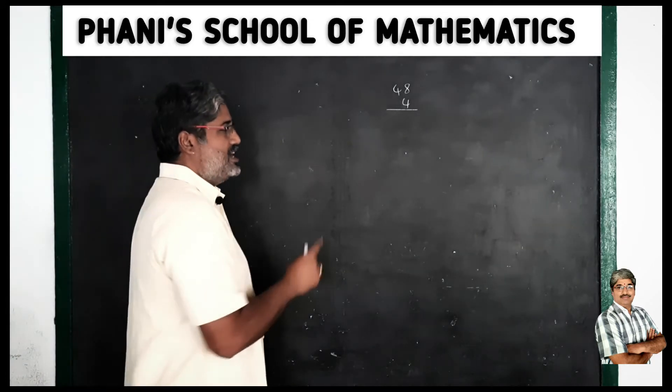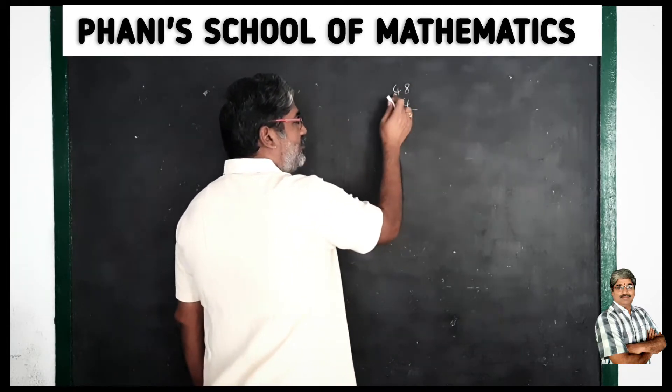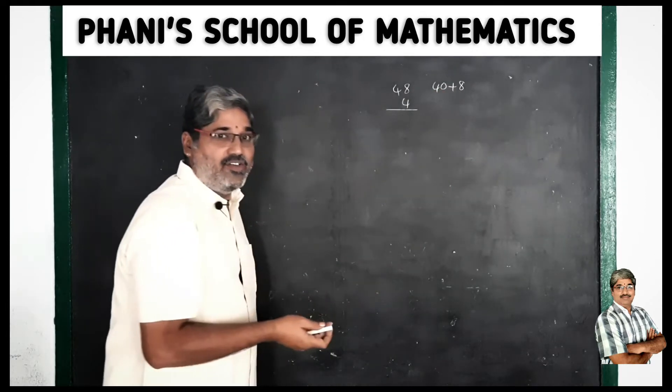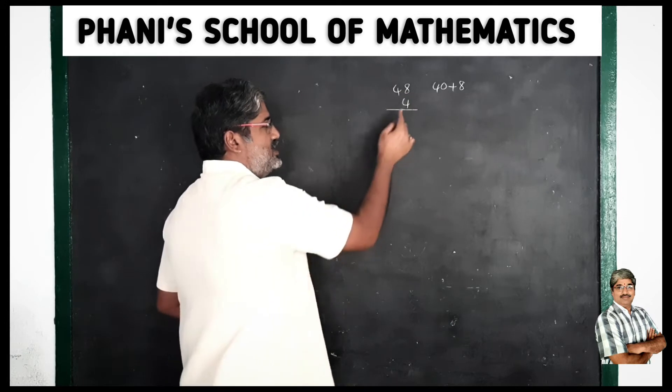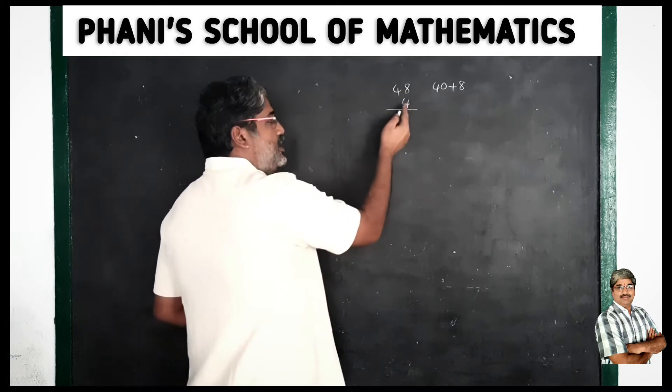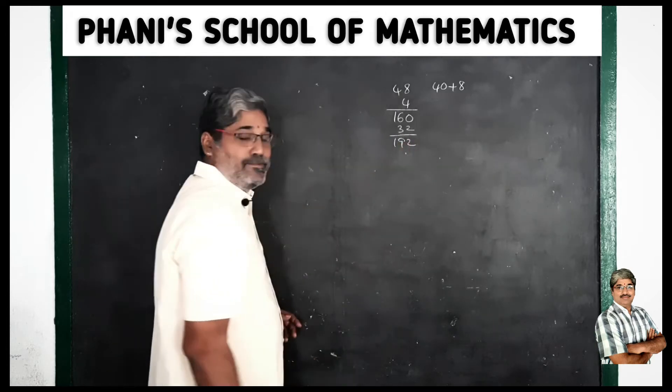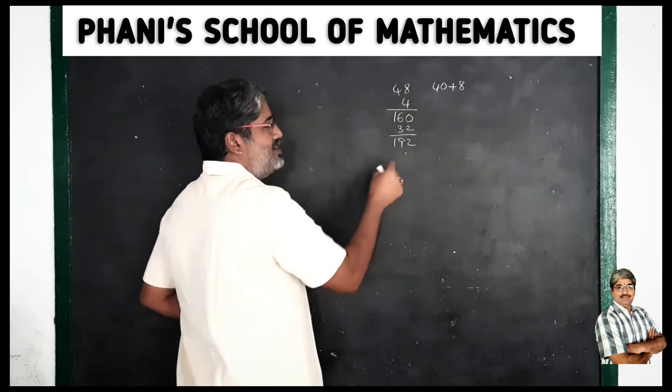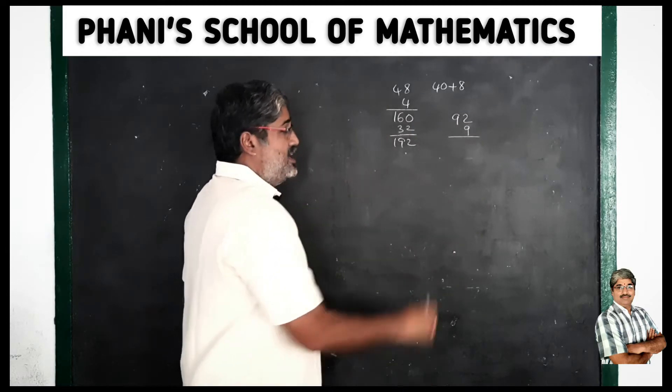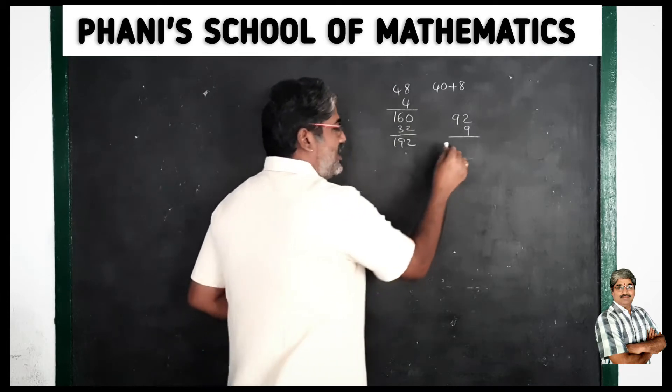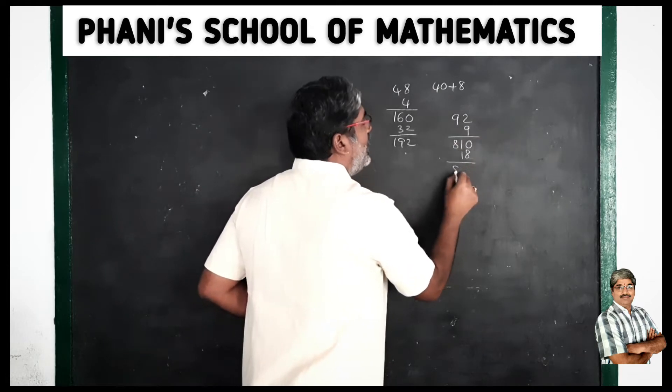Some right to left multiply, 4 fours are 48 and 40 plus 8. I am going to show you 48 and 48. If you are going to multiply 4, 4 fours are 160, 8 fours are 32, so 192 is the answer. This technique is the answer. Suppose 92, 9 nines are 81, so 810, 2 nines are 18, so 8128 is the answer.